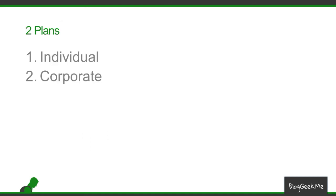There are two plans for the course: the individual plan, for people who want to enroll on their own, and the corporate plan, which is for groups of five people or more and includes all of the bonuses. The individual plan includes the bonuses only during the discount timeframe, which is one week from now.